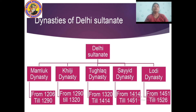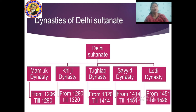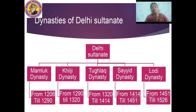Now look at this flowchart. In this flowchart you will understand nicely about the dynasties of the Delhi Sultanate. First came the Mamluk dynasty 1206–1290, then the Khilji dynasty 1290–1320, then the Tughlaq dynasty 1320–1414, then the Sayyad dynasty 1414–1451, and lastly the Lodi dynasty 1451–1526. Students, you have to draw this flowchart in your notebook and learn the dates for each dynasty.